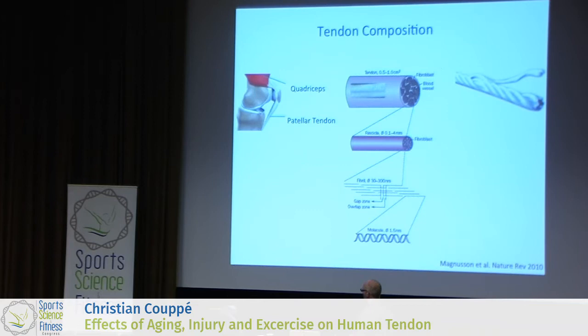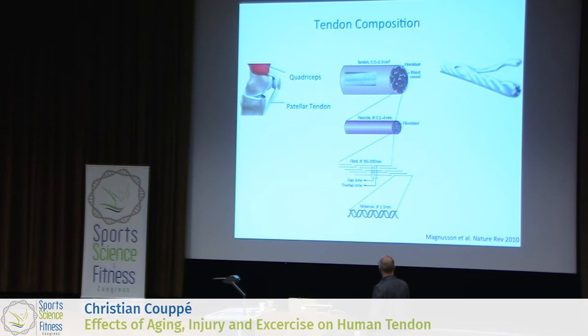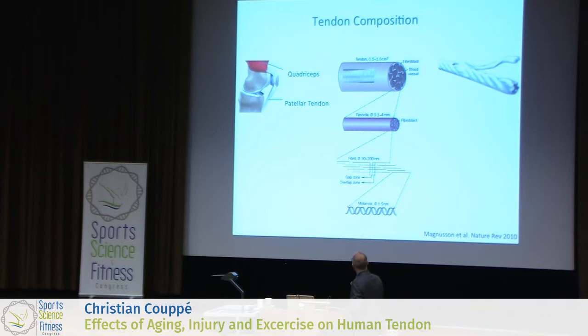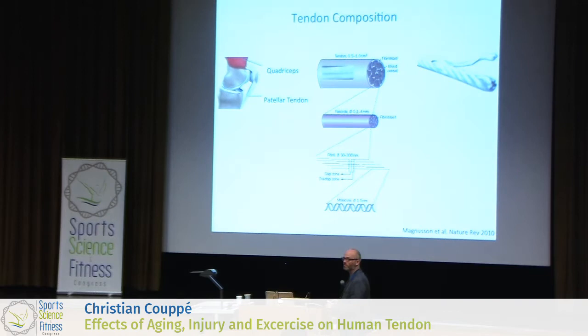First we would like to briefly go through the tendon, how it is actually composed, in order to understand what's going on with aging. The tendon is regarded as a rope-like structure. Beginning at the microscopic level, we have the whole tendon, then we come down to the fascicles, and then to the very smallest functional unit: the collagen fibers.